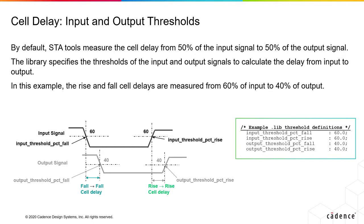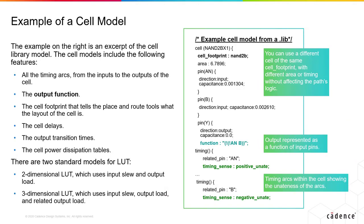In this example, we are measuring the cell delay from 60% of the input to 40% of the output because the input threshold is given at 60%, and the output threshold is at 40%. You'll see a lot of different data for any cell in that particular cell model inside the library.